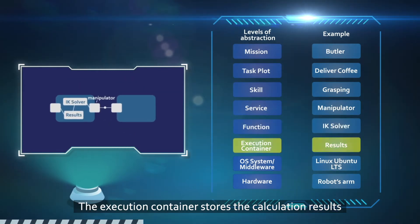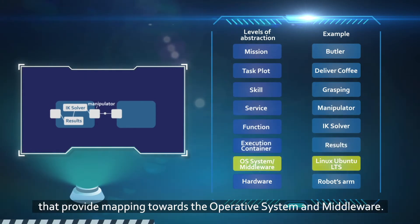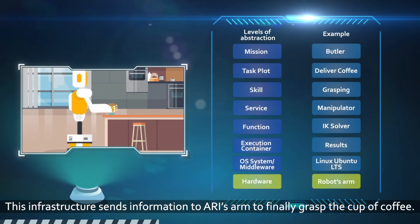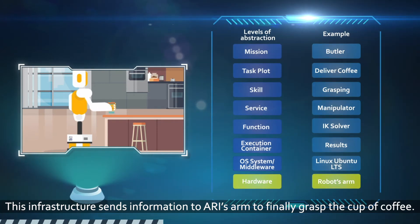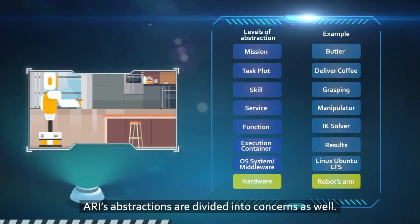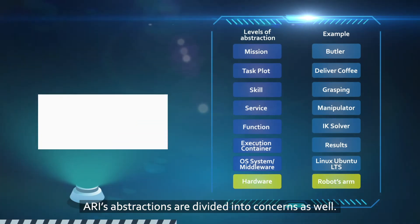The execution container stores the calculation results that provide mapping towards the operative system and middleware. This infrastructure sends information to Ari's arm to finally grasp the cup of coffee.